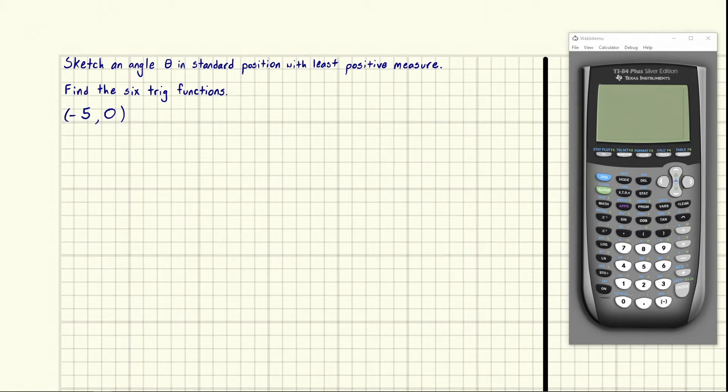So first off let's just start by sketching this point. We're going to make a coordinate axis here. We're going to have our y and our x-axis and the point negative five comma zero is right here. Negative five comma zero. That's the point.